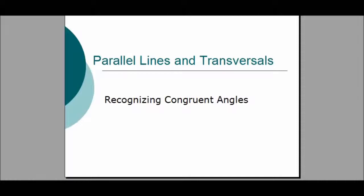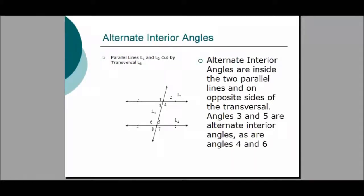The first theorem is the Alternate Interior Angle Theorem, which states that if two parallel lines are cut by a transversal, the alternate interior angles are congruent. Alternate interior angles are inside the two parallel lines and on opposite sides of the transversal. Angles 3 and 5 are alternate interior angles and are congruent. Angles 4 and 6 are also alternate interior angles and are congruent.